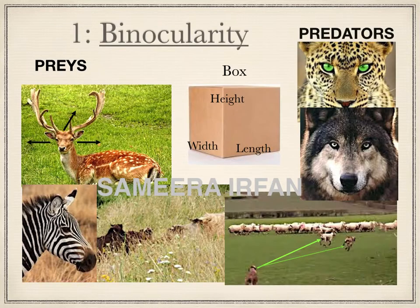Binocularity is defined as the ability to focus upon an object with both eyes so as to create a single three-dimensional or stereoscopic image. The three dimensions means appreciating the length, height, and depth of the object in view, as shown in the box.